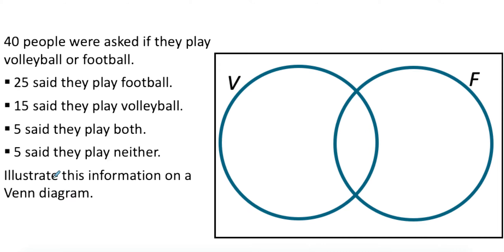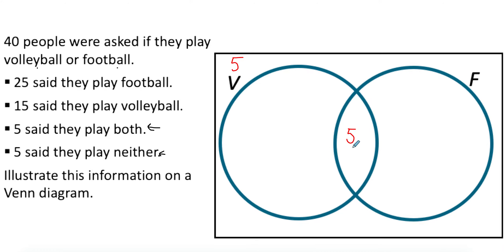Whenever you're dealing with Venn diagram problem solving, always deal with the intersection first, especially if you want to illustrate the information. I have two sets — volleyball and football — so I'm going to create a two-set Venn diagram with a box around them to show the universal set. Those that play neither are outside. Always start with the inside, whether you have a number or not. So five goes in the intersection.